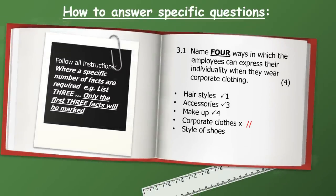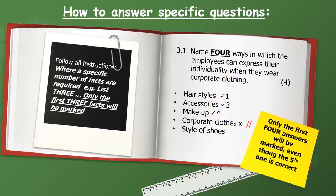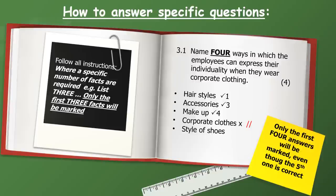Another example is where a specific number of facts are required. For example, list three — only the first three facts will be marked. If a question says name four ways in which employees can express their individuality when wearing corporate clothing, and the learner writes hairstyles, accessories, makeup, and then incorrectly writes corporate clothing — even though the fifth answer, style of shoes, is correct, it will not be marked because only the first four answers will be marked.